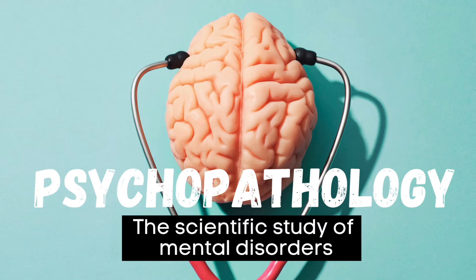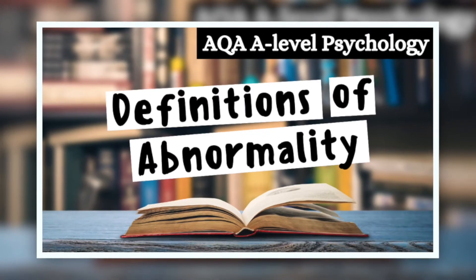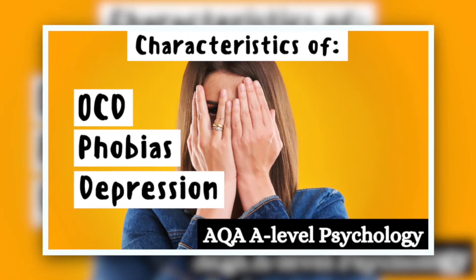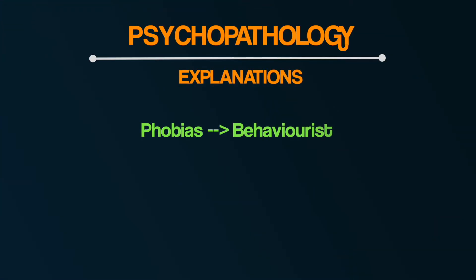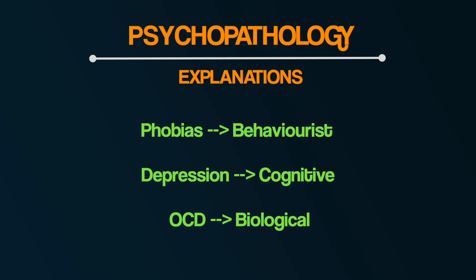Hey everyone, welcome back to Bear It In Mind. We're back with another video exploring the topic of psychopathology. So far in this series we've explored definitions of abnormality and we've looked at the characteristics of phobias, depression and OCD. Now we're going to move on to look at the explanations for these conditions. For the psychology course the emphasis is just on one explanation for each condition: for phobias a behaviourist explanation, for depression a cognitive explanation, and for OCD a biological explanation. That's not to say that there aren't other ways to explain these conditions — it's just that for the A-level course the focus is on one type of explanation for each condition.